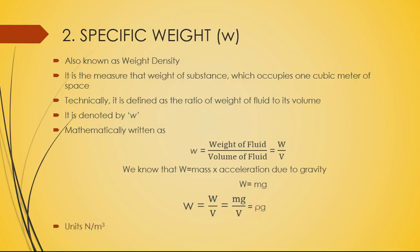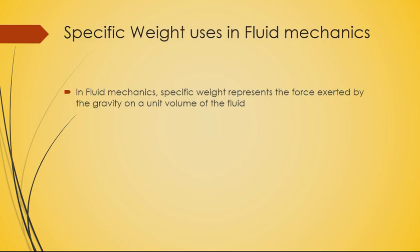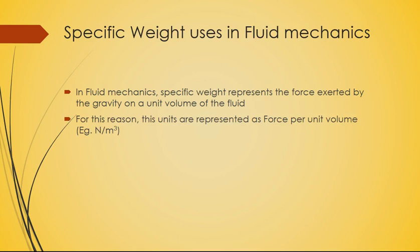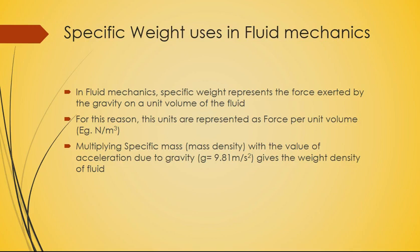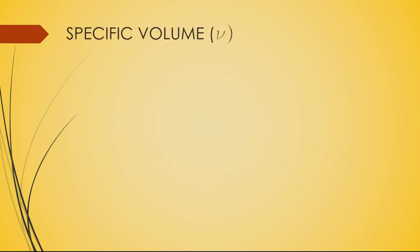The units of specific weight are Newton per meter cube. In fluid mechanics, specific weight represents the force exerted by gravity on a unit volume of fluid. Mass is constant and does not change anywhere, but weight varies according to the planet. On Earth, the acceleration due to gravity is 9.81 m/s². Since weight is a force influenced by gravity, specific weight is represented in Newton per meter cube.